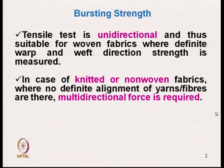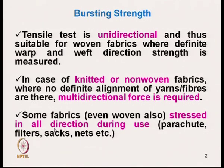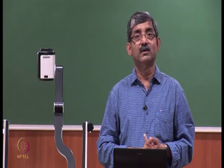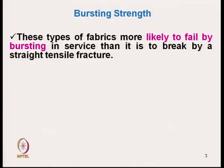In case of knitted or nonwoven fabrics where no definite alignment of yarns or fibres exists, multi-directional force is required. Some fabrics like parachute fabric, filter cloth, sacks, and nets — when in use, these fabrics are stressed in all directions. So we need to test the bursting strength. These types of fabrics like parachute, filter fabric, and geotextiles are more likely to fail by bursting in service than to break by straight tensile fracture.